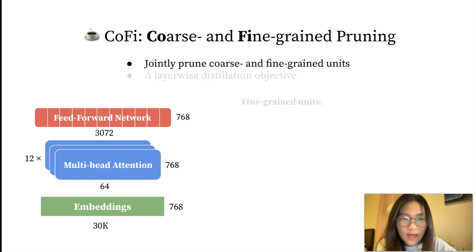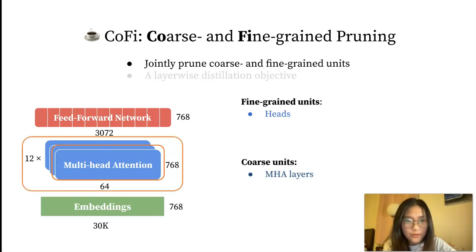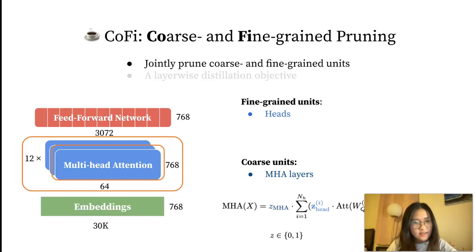In CoFi, we allow the model to prune fine-grained units like heads. We also allow the model to prune head layers entirely, which means all 12 heads in a layer are pruned. Now the multi-head attention function has two types of head masks. One controls the whole head layer and the other controls the heads. A single head can be pruned through its own or through the layer it belongs to.